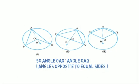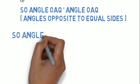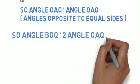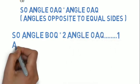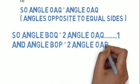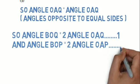Now what I will write is: angle BOQ equals 2×angle OAQ—mark it as equation (1). Because OAQ is equal to OAP, you can write 2×angle. Similarly in the other triangle also—mark it as equation (2).